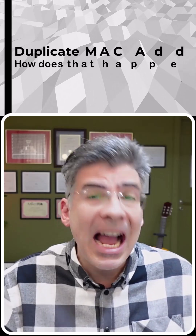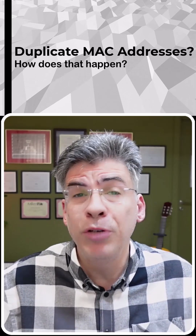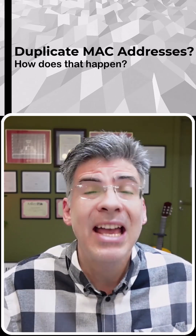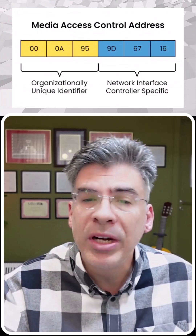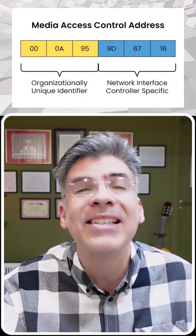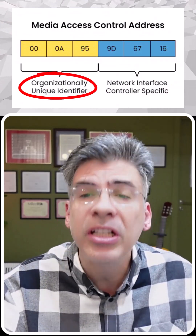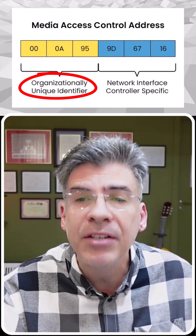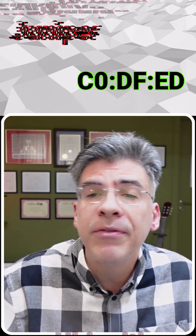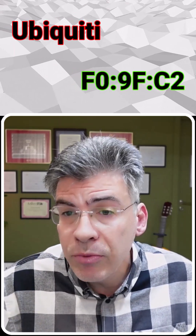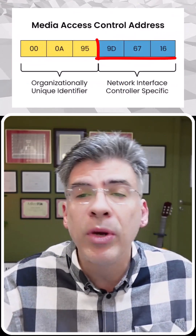We've all heard about duplicate IP addresses, but duplicate MAC addresses — how does that happen? MAC addresses are composed of 48 bits. The first 24 are known as the organizationally unique identifier, or OUI. Each manufacturer is assigned one or more unique OUIs to use for their devices.